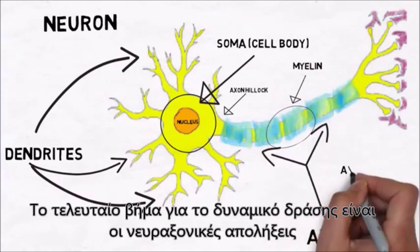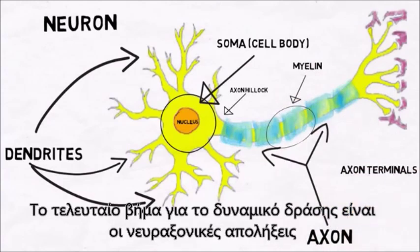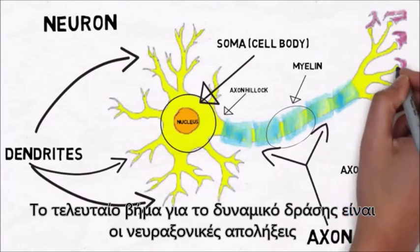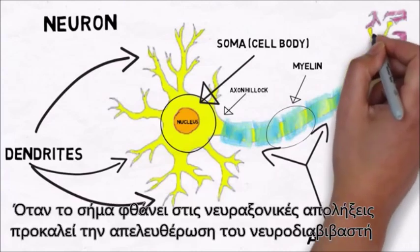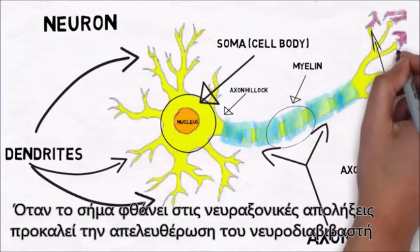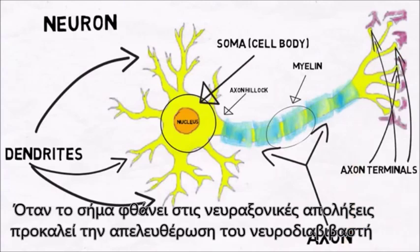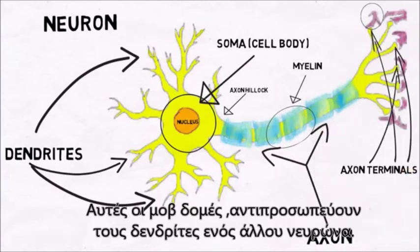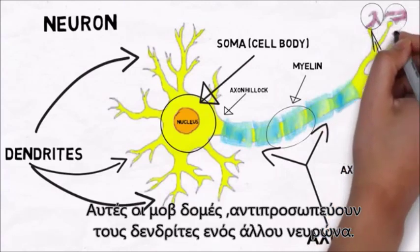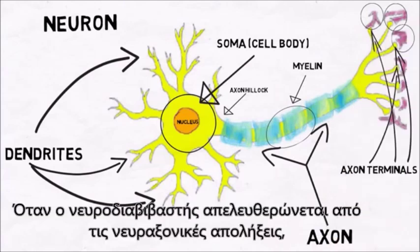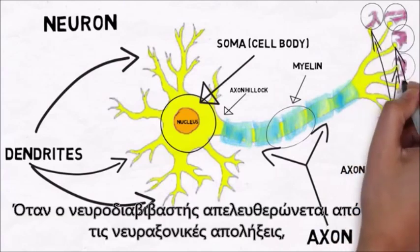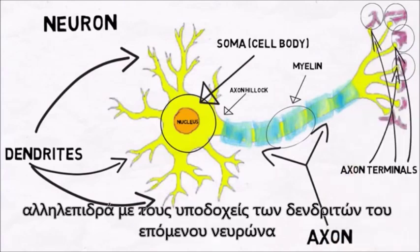The last step for the action potential is the axon terminals, also known as synaptic buttons. When the signal reaches the axon terminals, it can cause the release of neurotransmitter. These purple structures represent the dendrites of another neuron. When a neurotransmitter is released from axon terminals, it interacts with receptors on the dendrites of the next neuron, and then the process repeats with the next neuron.